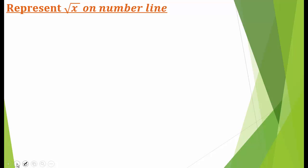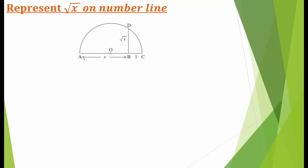In exercise 1.2, we learned how to represent irrational numbers on a number line. Today we will learn how to represent the square root of a decimal number on the number line. To represent root x: first, draw AB equal to x units. Then draw BC equal to 1 unit. If x is 9.6, then AB is 9.6 and BC is 1. Now take the perpendicular bisector of AC. This gives point O, the midpoint of AC.